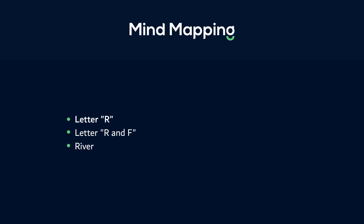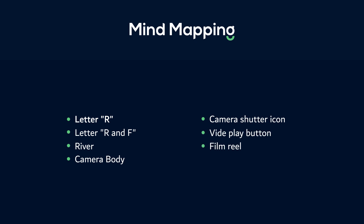To emphasize the photography and videography services, we can use elements like a camera body, camera shutter icon, video play button, film strip, or film reel. But I think there is a problem with these elements as they are very common and overused, so I was thinking of something different for this studio logo.